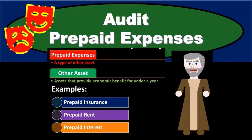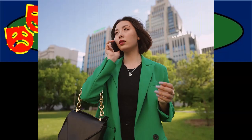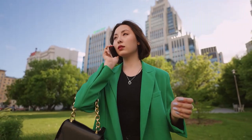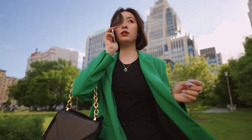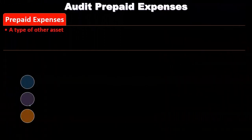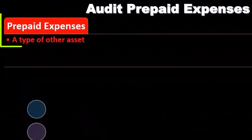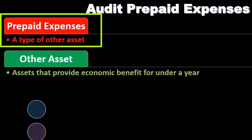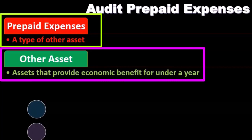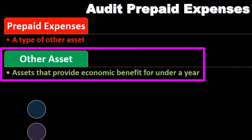In this presentation we will discuss the audit process related to prepaid expenses. We'll start off by discussing what prepaid expenses are. Prepaid expenses are a type of other assets, which leads to the question of what other assets are. Other assets are assets that provide economic benefit under a year.